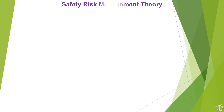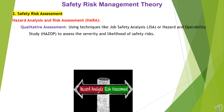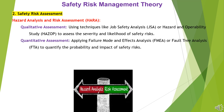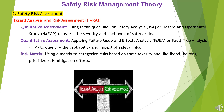2. Safety Risk Assessment — Hazard Analysis and Risk Assessment (HARA). Qualitative assessment uses techniques like Job Safety Analysis (JSA) or Hazard and Operability Study (HAZOP) to assess the severity and likelihood of safety risks. Quantitative assessment applies Failure Mode and Effects Analysis or Fault Tree Analysis (FTA) to quantify the probability and impact of safety risks. A risk matrix is used to categorize risks based on severity and likelihood, helping prioritize risk mitigation efforts.